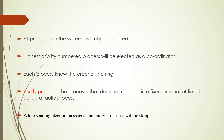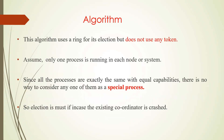All processes in the system are fully connected. The process with the highest priority number will be elected as the coordinator, as we have already seen in the bully election algorithm. Each process knows the order of the ring. A faulty process is one that does not respond within a fixed amount of time, and while sending election messages, the faulty process will be skipped. This algorithm uses a ring for selection but does not use any token.